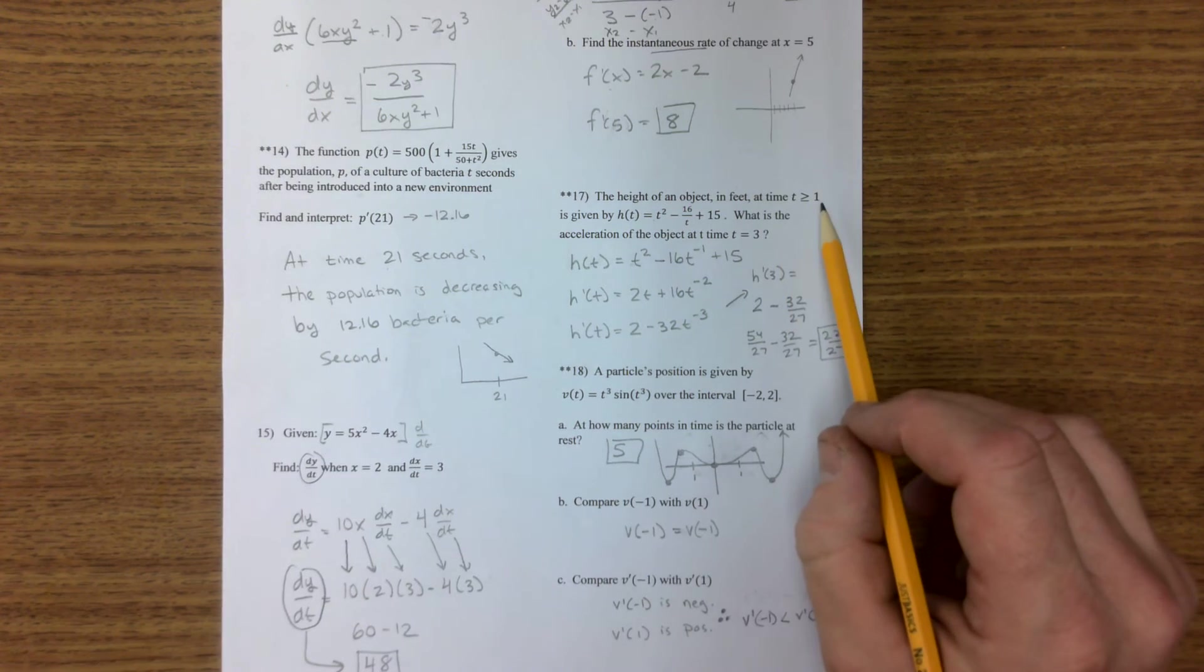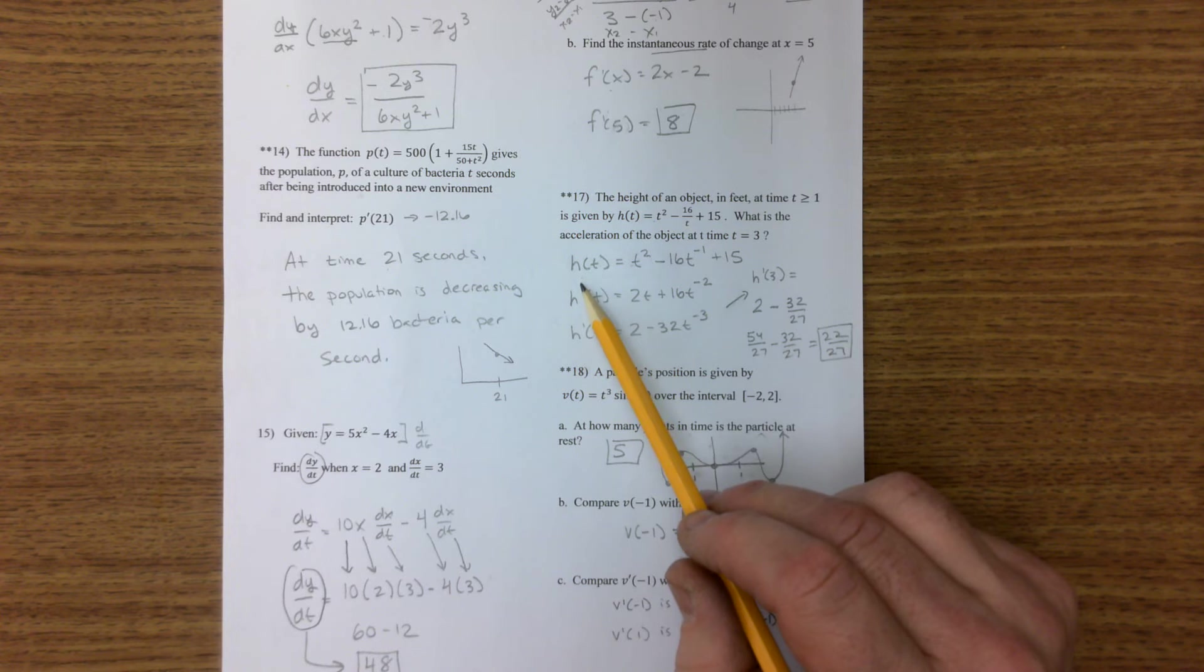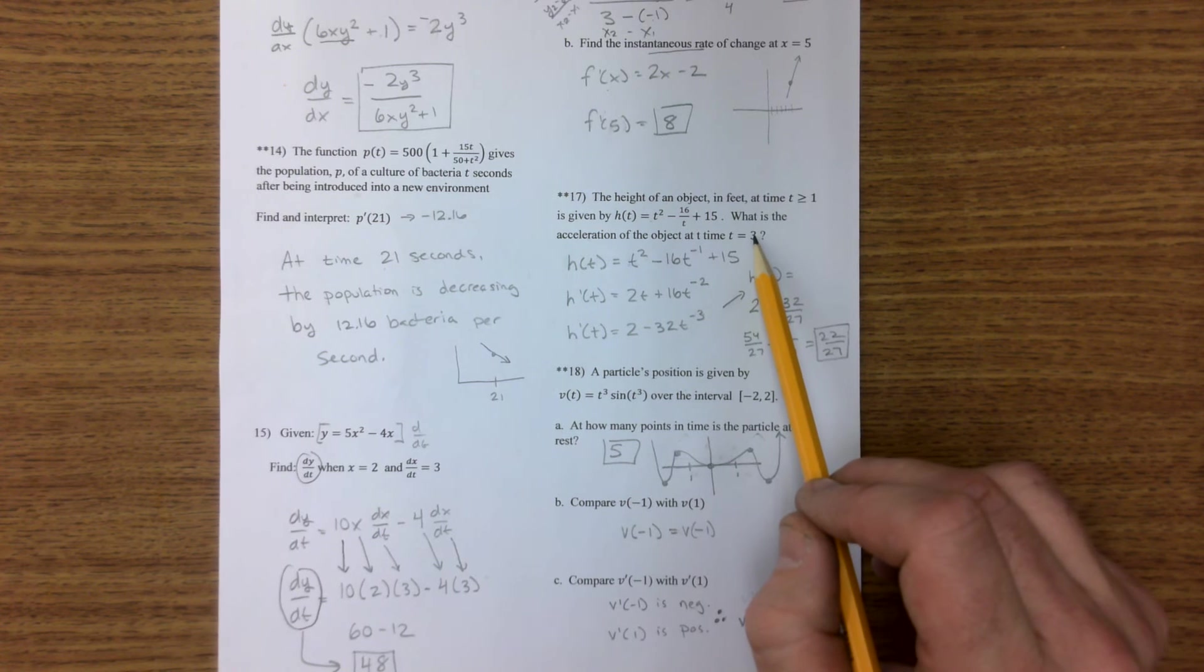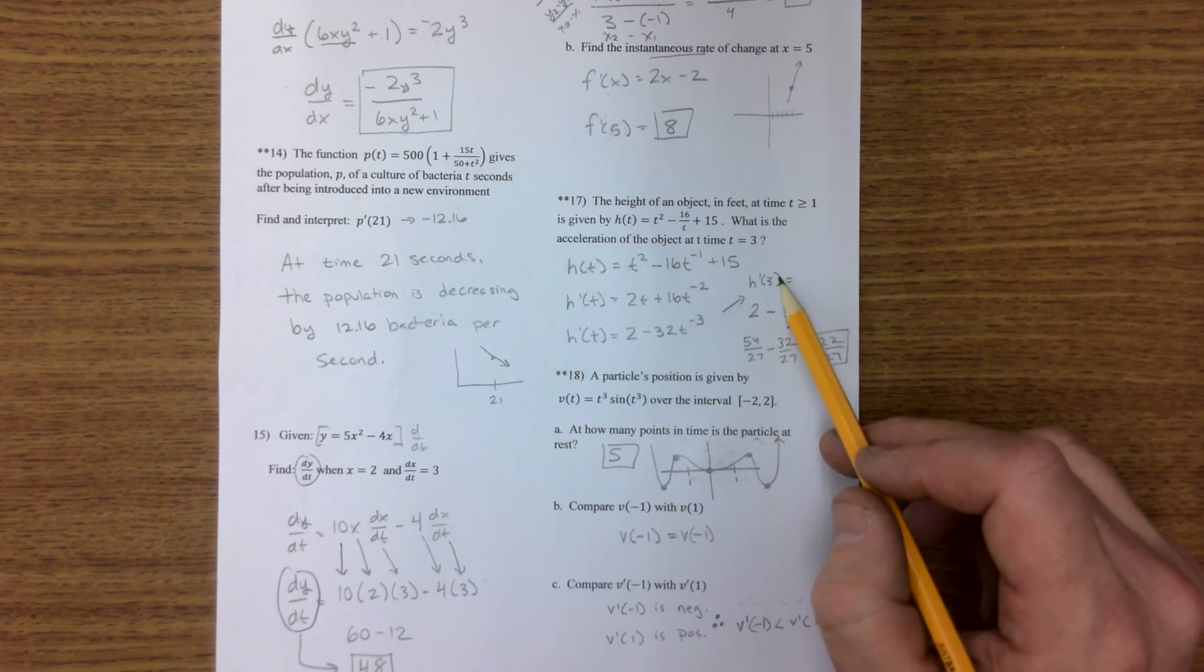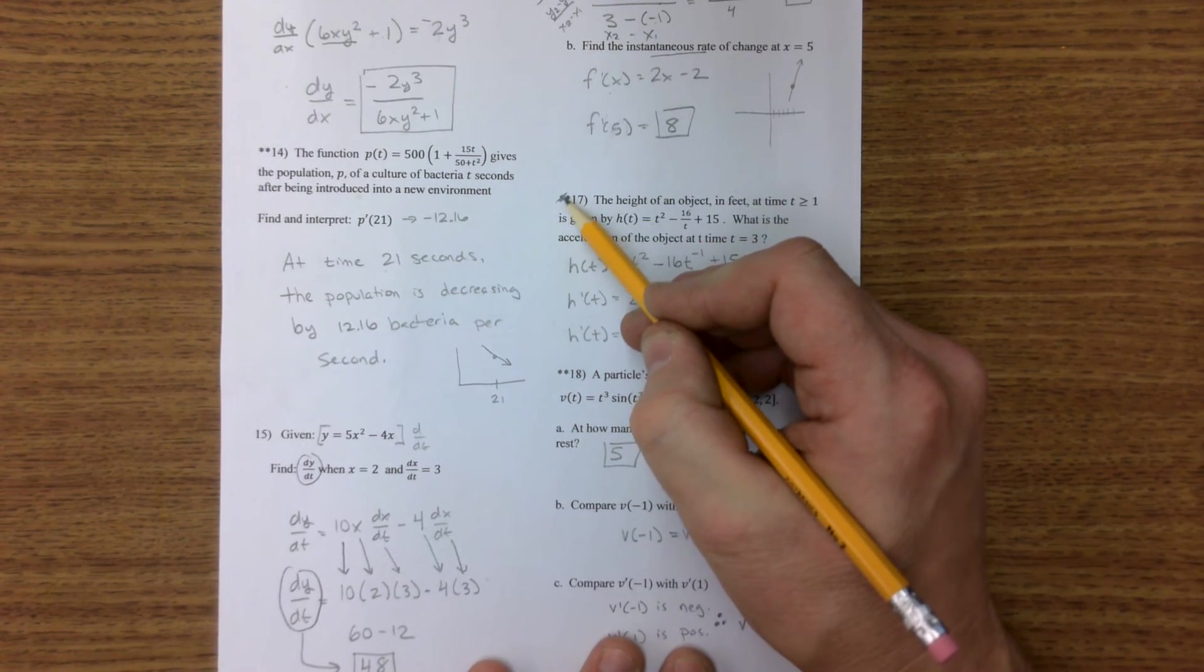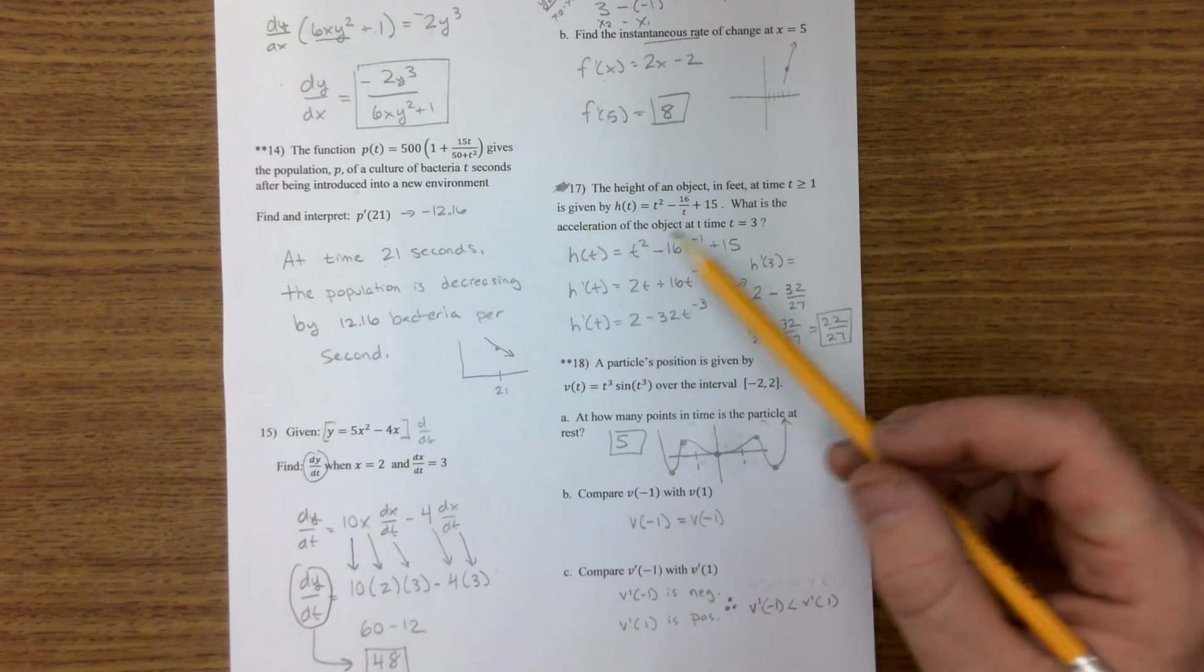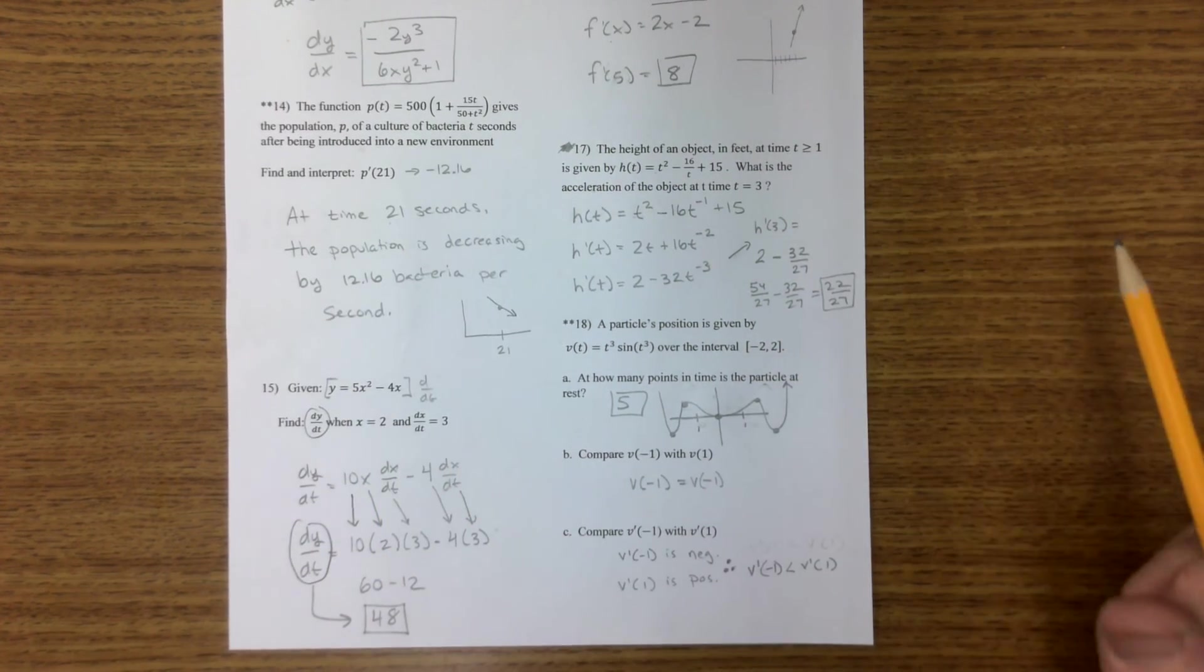The height of an object here. It's given by this equation. What is the acceleration? Acceleration is the second derivative. So you take the derivative, then take the derivative again, and plug in 3. I took the derivative, I took the derivative, I plugged in 3, did the math, and I have this. Now, this says calculator problem, but after looking at it, it's not a calculator problem. You should be able to do this math without a calculator. There are ways to do this on a calculator, but honestly, it might be easier without a calculator.